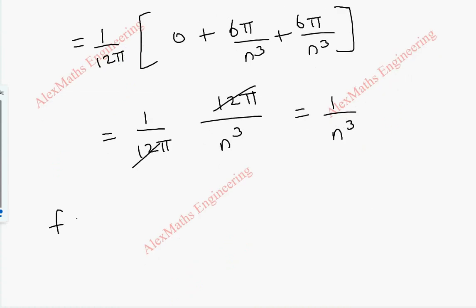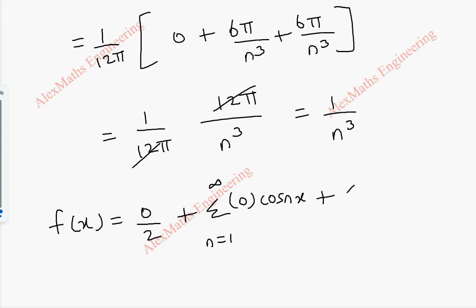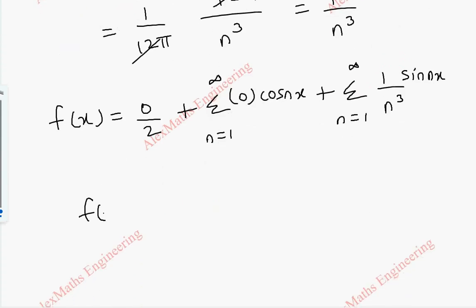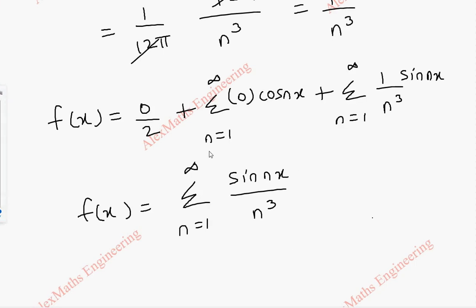Coming to the final formula: f(x) = a₀/2 + Σ aₙ cos(nx) + Σ bₙ sin(nx). Since a₀ = 0 and aₙ = 0, we have f(x) = Σ (n=1 to ∞) sin(nx)/n³. Thus we completed the first part of the question, which is expanding the given function as a Fourier series.